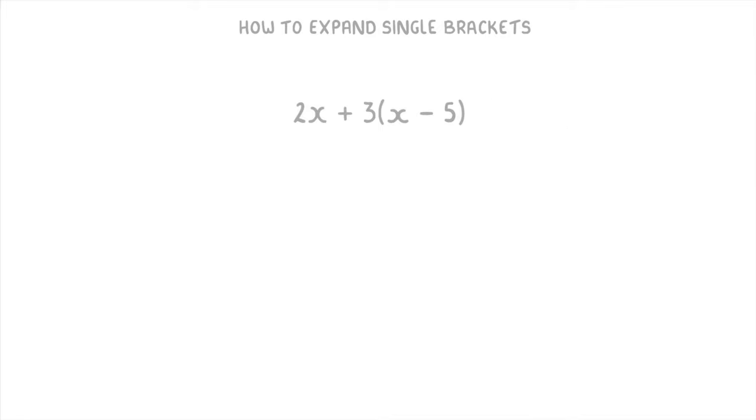Let's have a go at one more before we finish. The important thing in this one is that the bracket is only being multiplied by this 3. This 2x term on the left is completely separate for now. So the first thing you need to do here is multiply the 3 by the x and the minus 5, giving you 3x minus 15.